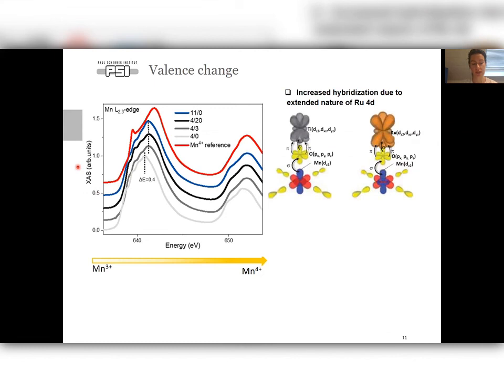And we see such a difference in charge transfer, maybe due to the extended nature of 4D orbitals of ruthenium that hybridizes more with the oxygen and therefore manganese. So it causes such a valence stability in the bilayers compared to single layers of LSMO in ultrafine limit.